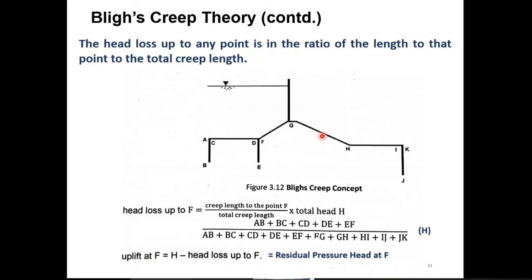We can only remove creep length from that point. Yes, we can only remove creep length from that point divided by the total creep length. The ratio of the creep length should be multiplied by the total head capital H available on the upstream side. So this will give you the head loss. And then how to compute the uplift pressure head?